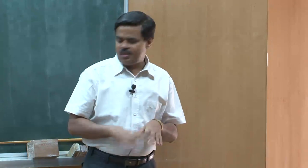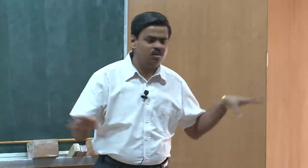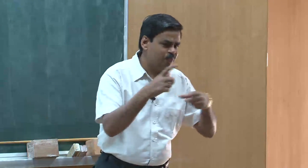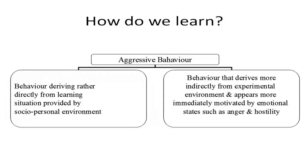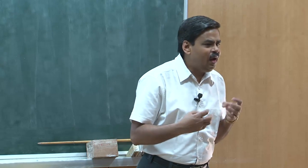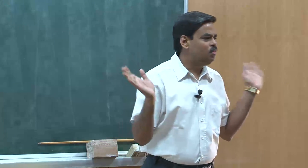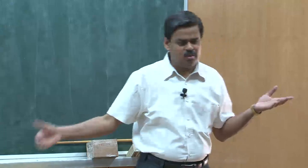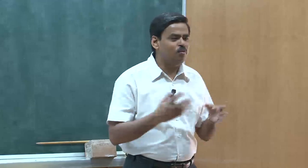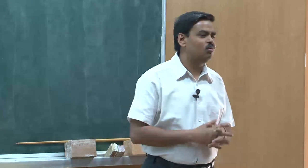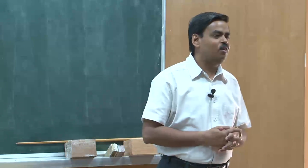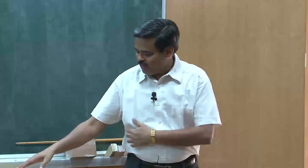Aggressive behavior could be learned directly from the social-personal environment. Later we will also come to Anderson's model of how these things form a network. So aggressive behavior could be behavior that is derived and directly learned from the social-personal environment — you have certain types of acts of aggression which you very commonly find in your personal social environment. We will look at two interesting reports: one from the UN and another from a UN body — one on Indian women and the other on Indian adolescents, with very interesting data.